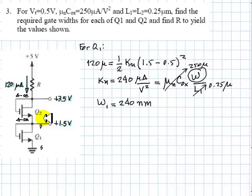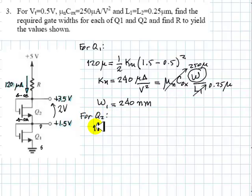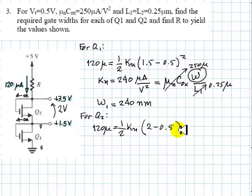What about the width of the channel for the second transistor? We use the same technique. We know the current is 120 microamps, and we know the voltage across that diode-connected transistor is 3.5 minus 1.5, which is 2 volts. So for Q2: 120 microamps equals one-half KN times the voltage 2 minus the threshold voltage 0.5, all squared. When we do that, we obtain KN for this other transistor.